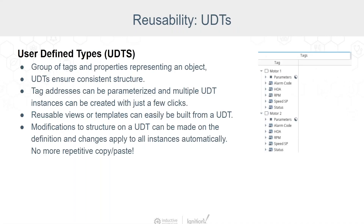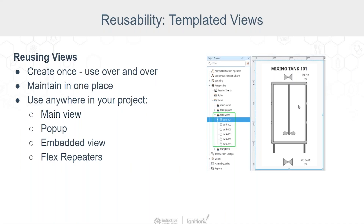Now let's talk about UDTs, or User Defined Types. A UDT is a group of tags and properties representing some object, like a tank or motor. This gives you a consistent structure — every instance will have the same alarms, properties, and folders. Tag addresses can be parameterized, and you can have multiple UDT instances created in just a few clicks. Modifications made on the definition automatically apply to all instances. If you find yourself building a folder of tags and then copying it to create another instance, it's time to build a UDT.